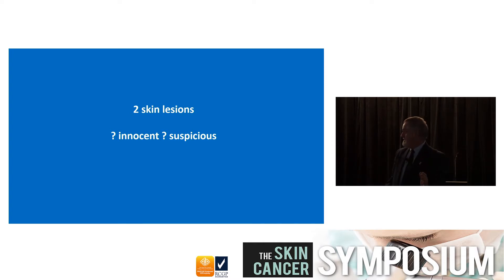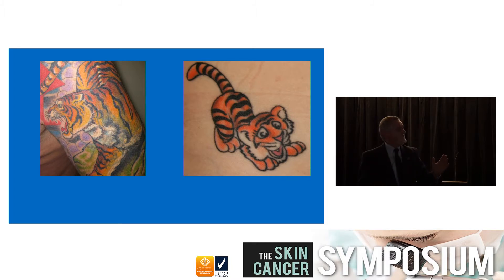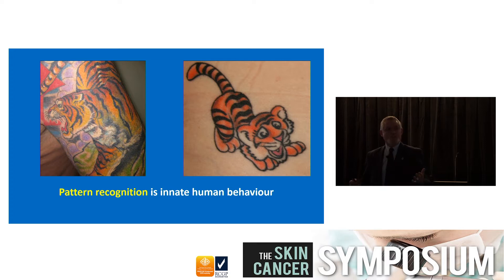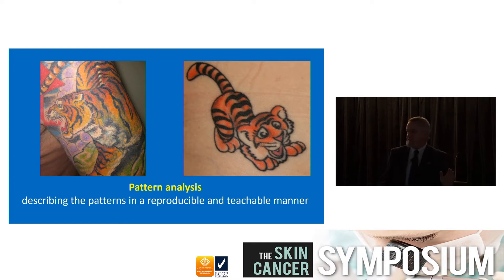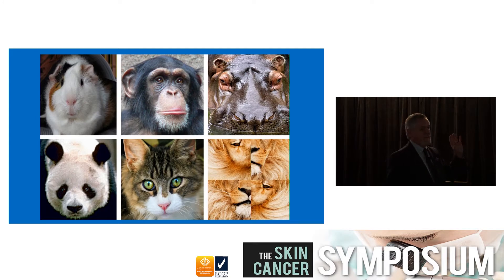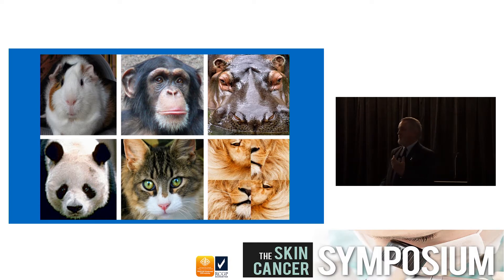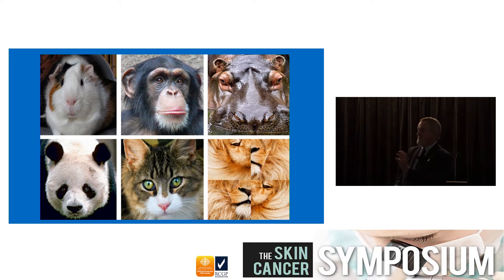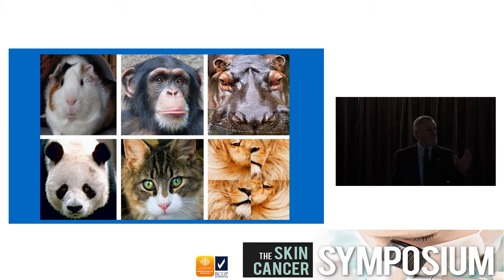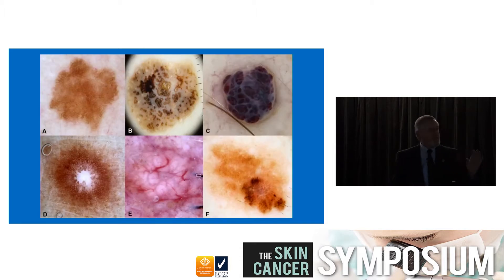Pattern recognition is innate behavior - not just in humans but in mammals, birds, bats, all sorts of things. Pattern analysis is describing the patterns in a reproducible and teachable manner. You know those images instantly because they are symmetrical, and our brains are made to recognize symmetrical patterns - that's how we recognize our mother's face. The one on the bottom right you know is a lion, but it wasn't instantly recognizable because it's chaotic and not symmetrical. That's an important principle.